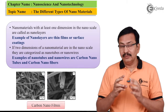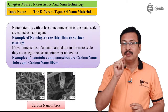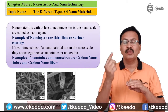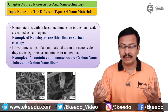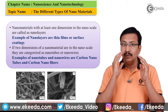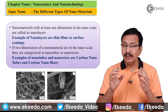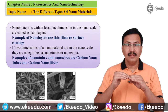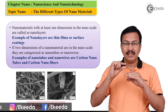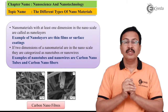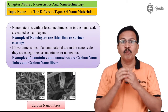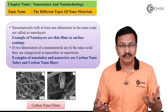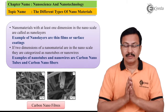All of us know that there are basically three dimensions: the first dimension, the second dimension, and the third dimension. Any nanomaterial which falls in the one-dimension range — meaning the nano size is extending only in one dimension — is called a nanolayer. An example of this is film coatings.